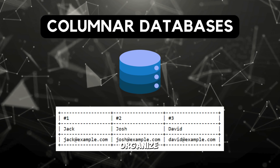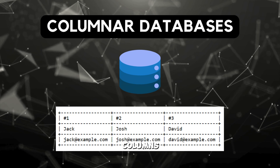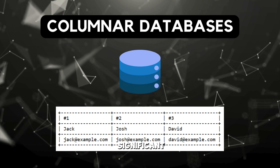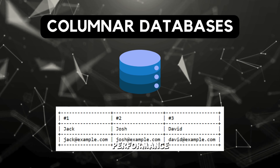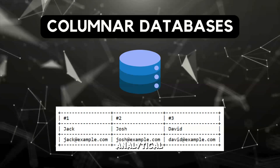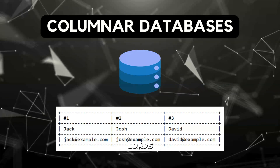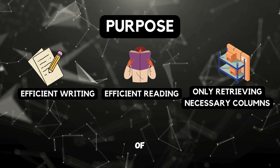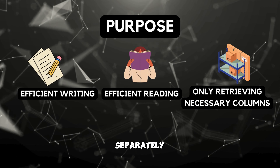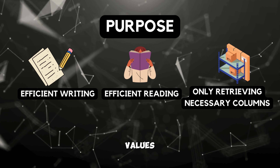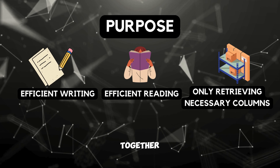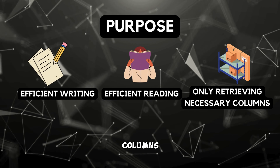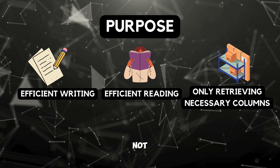Columnar databases organize data in columns. Such organization of data leads to significant performance improvements in analytical workloads. The purpose of a columnar database is to store all columns of a table separately but group the values from that column together, enabling data access in columns as a group, not as a row.